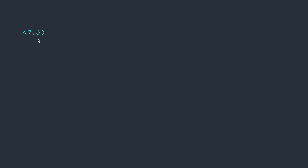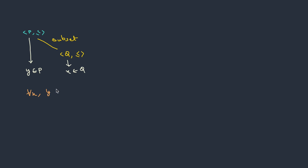Suppose we have a partial order P and a subset Q. The elements which belong to P, let's call them Y, and elements which belong to Q, let's call them X. Now for every X, if Y is always less than or equal to X, then this Y is called a lower bound. On the same lines, for every X, if Y is always greater than or equal to X, then it is called the upper bound.